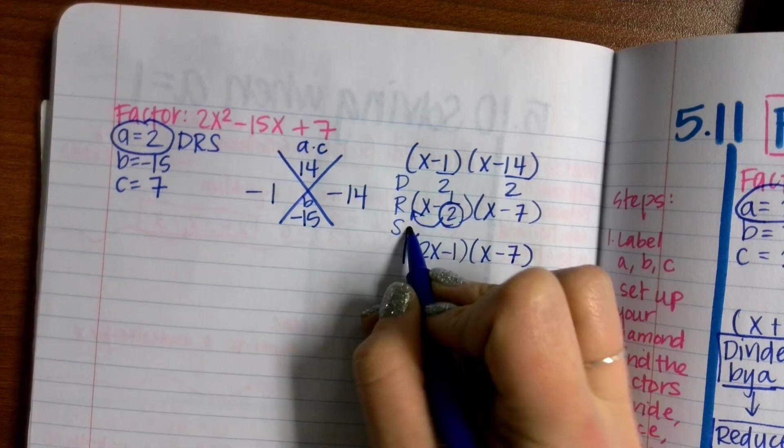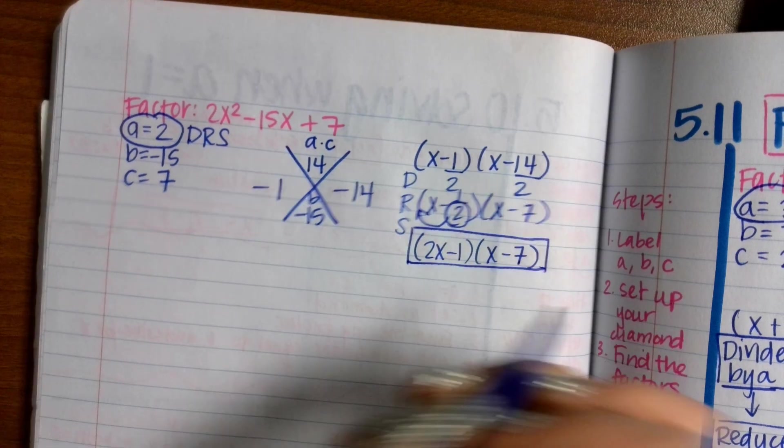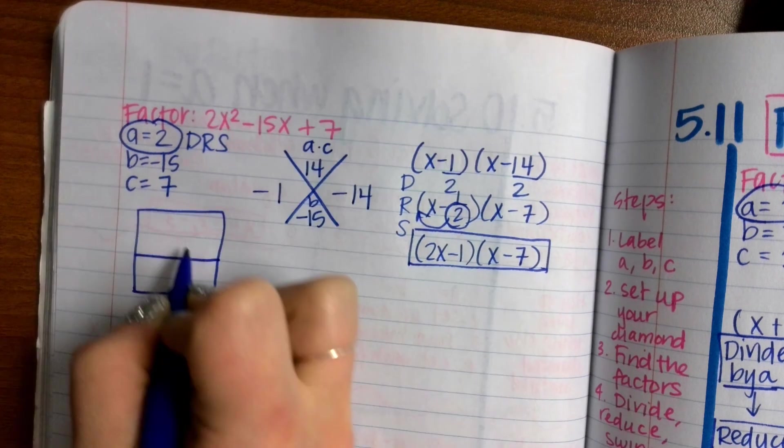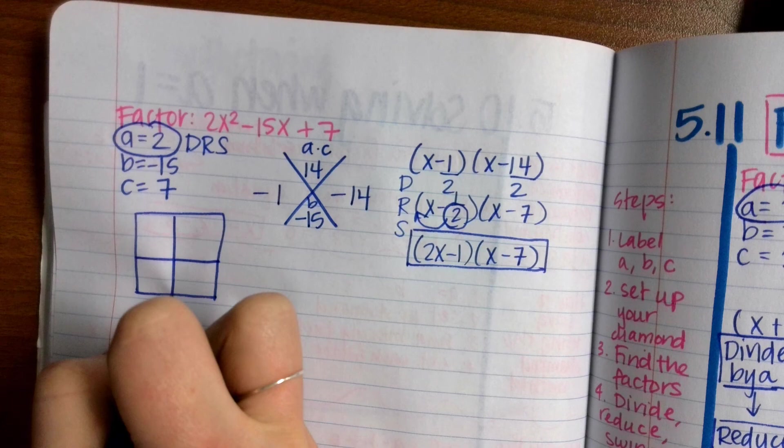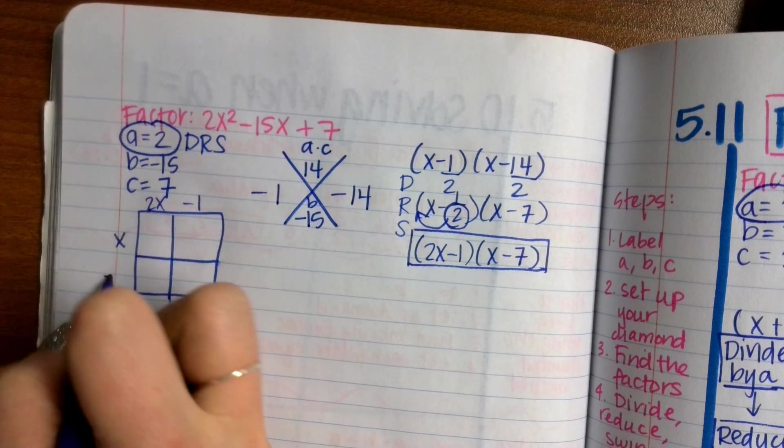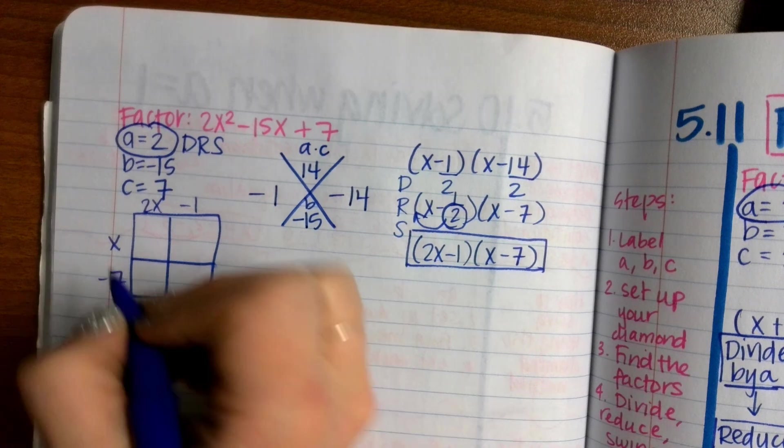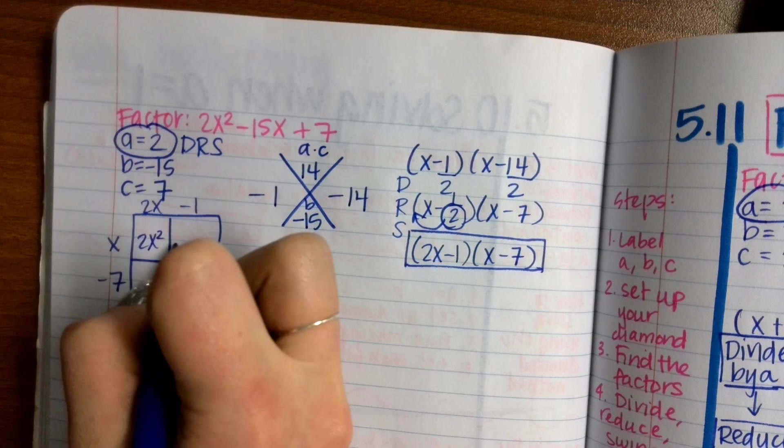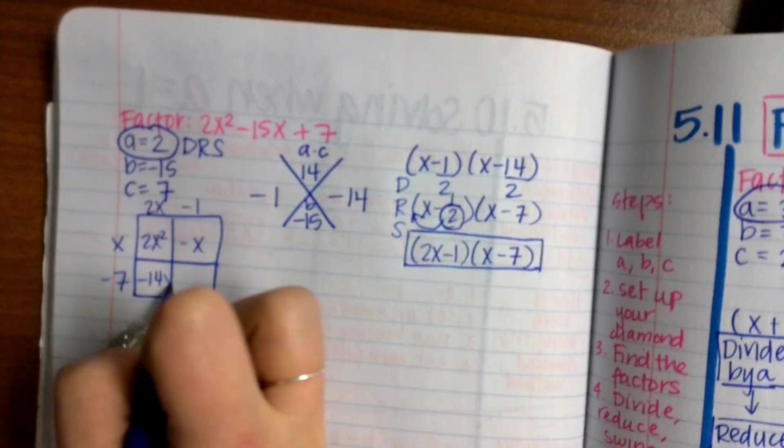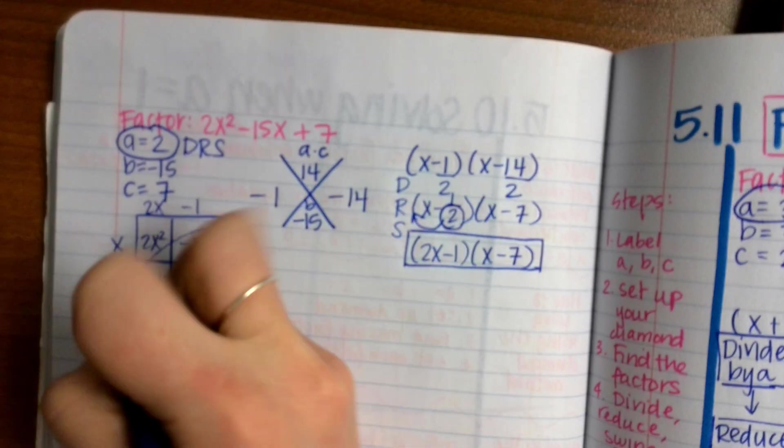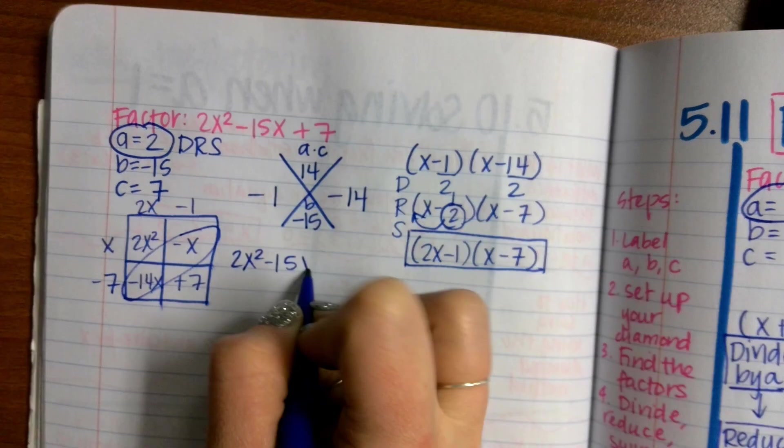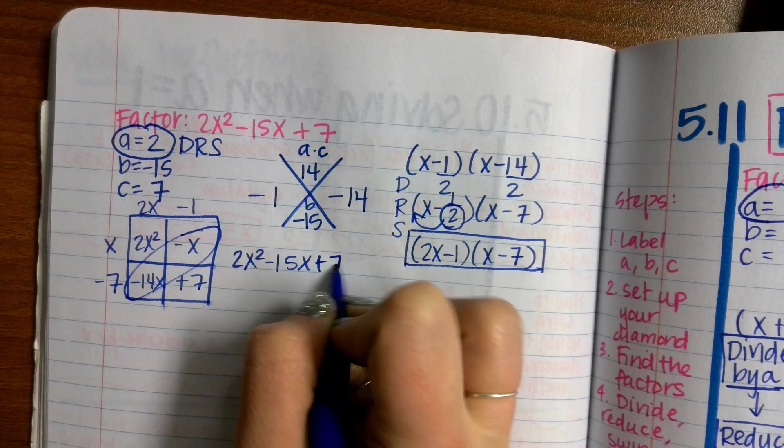How can I check? By using box. 2X minus 1, X minus 7. 2X squared, negative X, negative 14X, positive 7. Combine like terms. 2X squared minus 15X plus 7. That checks out. Those are my two factors.